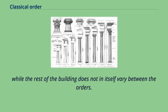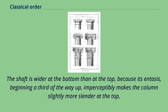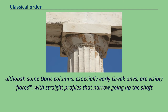While the rest of the building does not in itself vary between the orders, the column shaft and base also varies with the order, and is sometimes articulated with vertical hollow grooves known as fluting. The shaft is wider at the bottom than at the top, because its entasis, beginning a third of the way up, imperceptibly makes the column slightly more slender at the top. Although some Doric columns, especially early Greek ones, are visibly flared, with straight profiles that narrow going up the shaft.